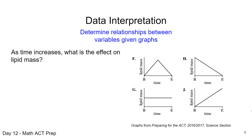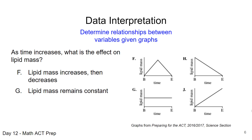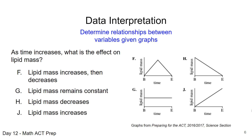As time increases, what is happening to the lipid mass? Let's look at each answer choice. In option F, lipid mass begins to increase, hits a maximum point, and then begins to decrease — almost a triangular figure. In option G, there's a straight horizontal line, meaning as time increases, lipid mass remains constant. In option H, over time lipid mass decreases, giving an almost right-angle figure. In option J, as time increases, lipid mass increases. This illustrates how to read different graphical representations.